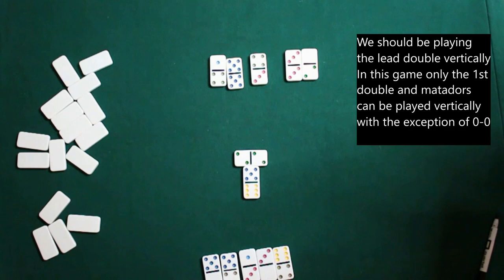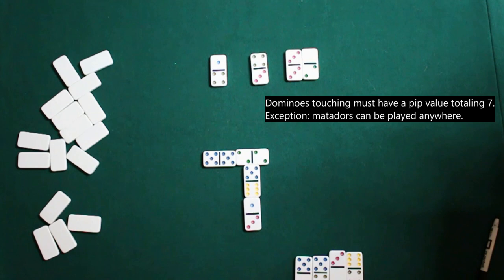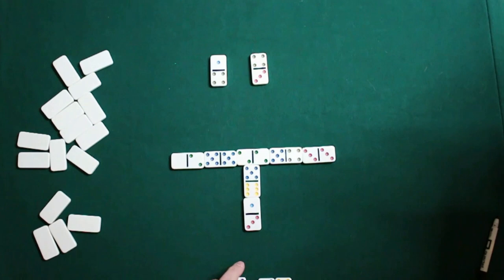Here we have a double 2, so anything with a 5 will make a 7. And then after that, anything touching just has to make a 7. So we see a 6-1 on the 5, 6-1, 3 domino going north and south.